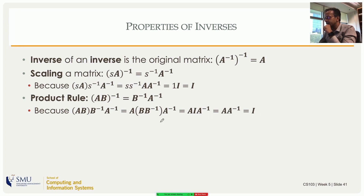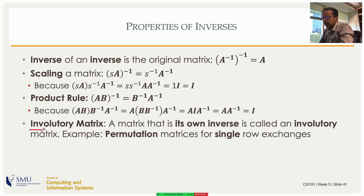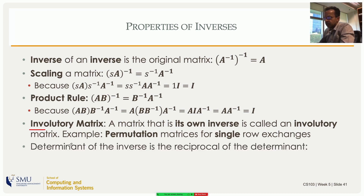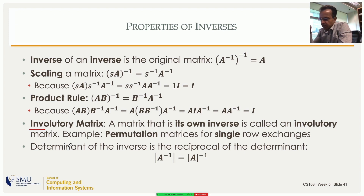You can prove these properties using the definition of the inverse — the proofs will involve the identity matrix between other matrices. A matrix that is its own inverse is called involutory. Permutation matrices implementing a single row exchange are involutory, since doing the same exchange twice gives back the original. Also, the determinant of the inverse is the reciprocal of the determinant.